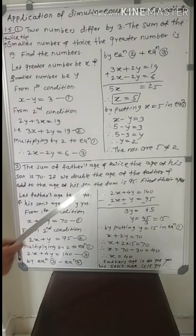Now from the second condition, if we double the age of the father and add to the age of his son, so father's age becomes 2x and add to the son's age plus y, equal to 95. This is equation number 2.